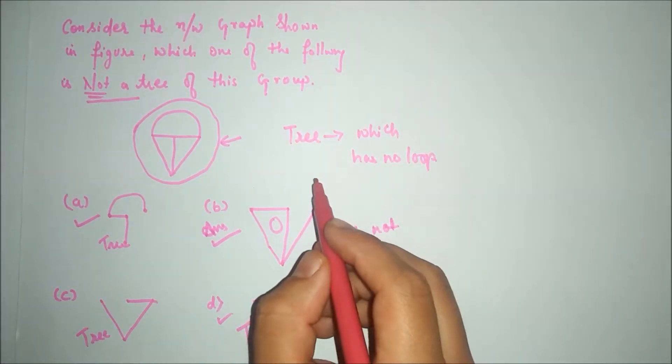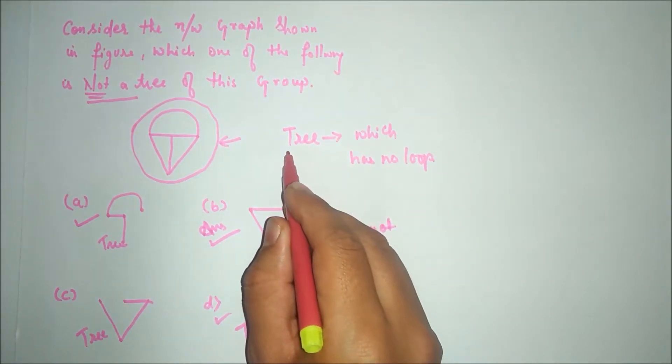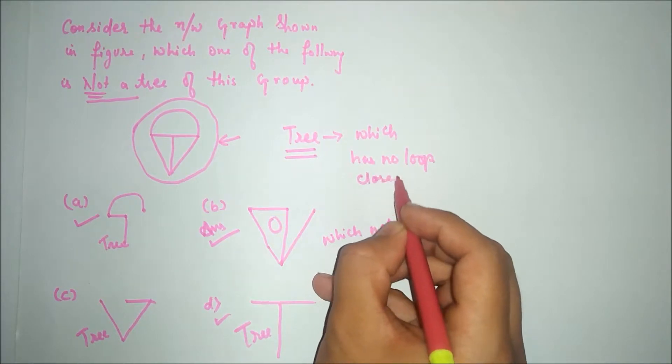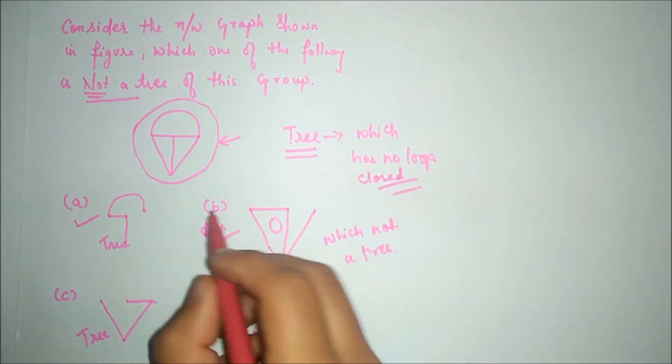And B has one closed loop, so our answer is B, which is not a tree. We have to first see what is meant by tree - tree means which has no closed loop. So our answer will be B.